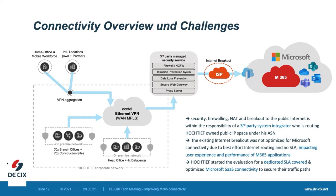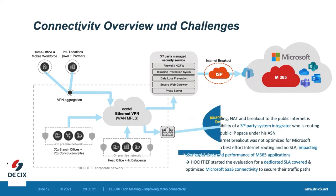The existing internet breakout was not optimized for Microsoft connectivity — just best-effort routing with no SLA. Once Hochtief migrated employees onto Microsoft 365 applications, they started evaluation together with Ecotel. At some point, Ecotel reached out to DE-CIX because they heard about the new Azure Peering Service developed with Microsoft. After a couple of technical sessions, the decision was made quickly — Hochtief said let's try it out, and this is where they implemented the Azure Peering Service.